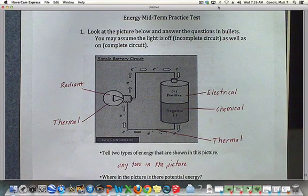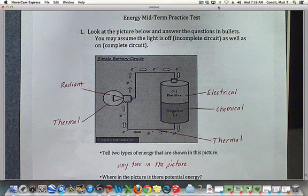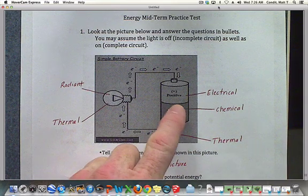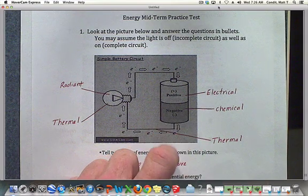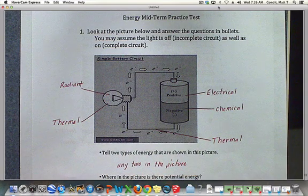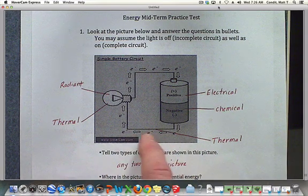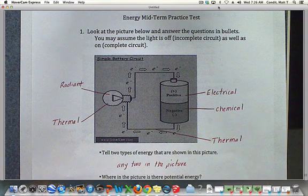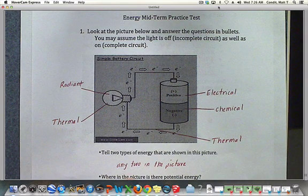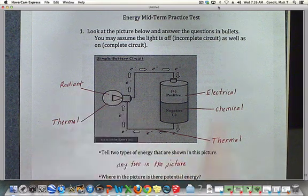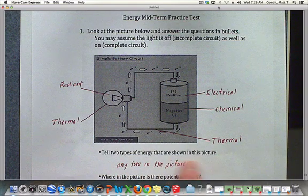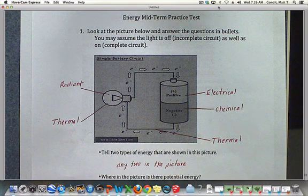We've got radiant energy coming out of the light bulb because you can see it. You also know that light bulbs get warm to the touch—they give off a lot of thermal energy. We've got electrical energy over in the battery, and that's being created by the chemical energy that's in the battery. Then we have thermal energy in the wire because we have the movement of electrons. You can actually see that in your toasters at home if you have a thin enough wire. So for the first question, really any two in the picture you can write down here. As long as you get two of them, you can list any of those two.